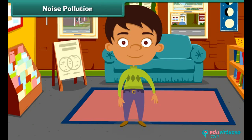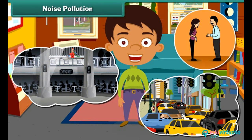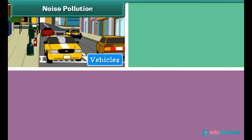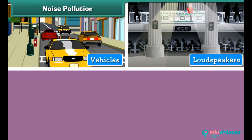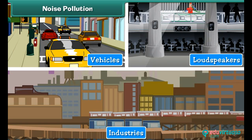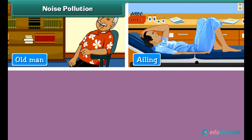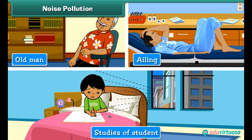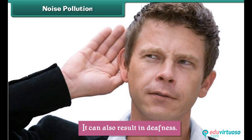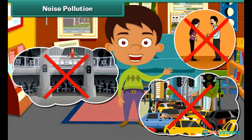Noise pollution. Unwanted sound that disturbs the environment is called noise pollution. It is caused by the movement of vehicles, honking of horns, use of loudspeakers, and running of machines in industries. Noise pollution disturbs the old and the ailing, interferes with the studies of students, and can also result in deafness. We can prevent noise pollution by reducing unwanted sounds.